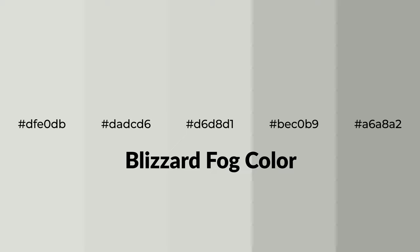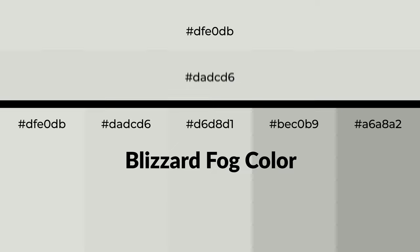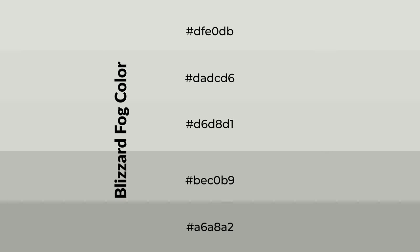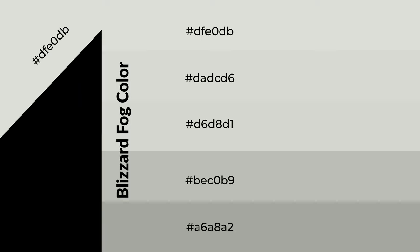Warm shades of Blizzard Fog color with gray hue for your next project. To generate tints of a color, we add white to the color — tints create light and exquisite emotions. To generate shades of a color, we add black to the color, and it is used in patterns, 3D effects, and layers. Shades create depth and drama.